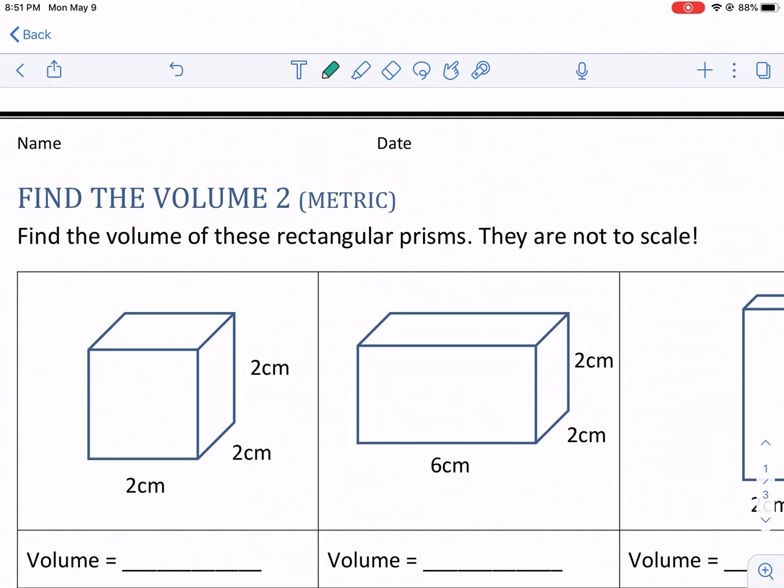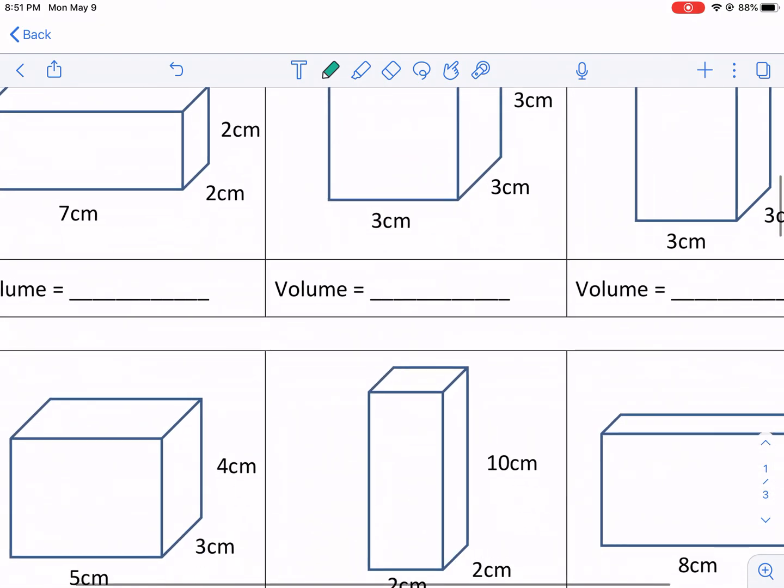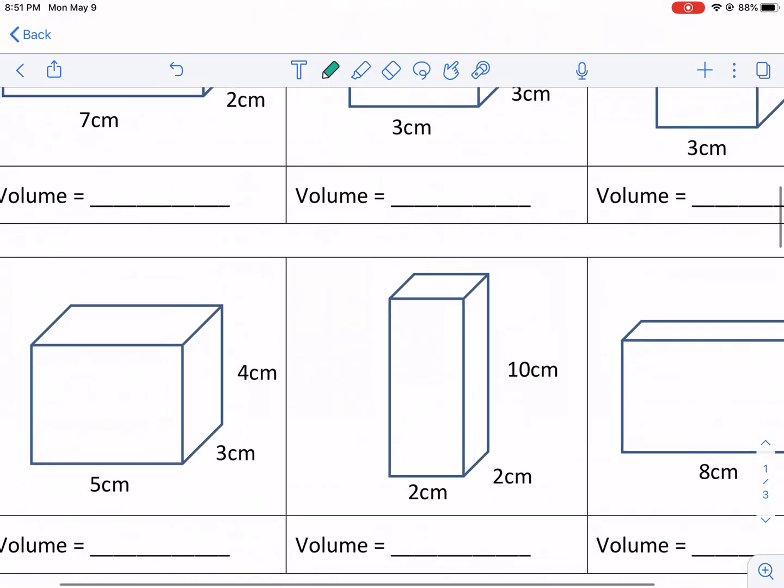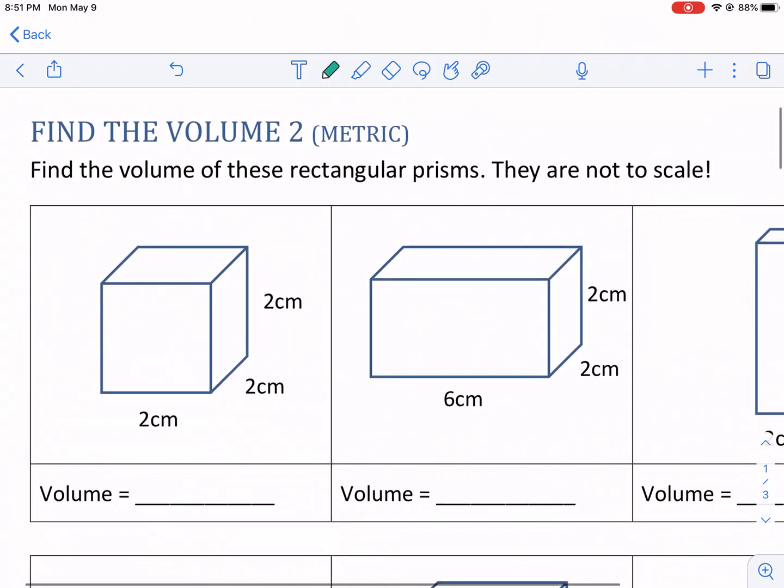Hi, everyone. This is Mr. West. Today, we're doing a worksheet called Find the Volume 2 Metric. This is a worksheet that can be found on mathsalamanders.com. There will be a link in the description below. There's tons of worksheets like this on that website. Be sure to check it out.